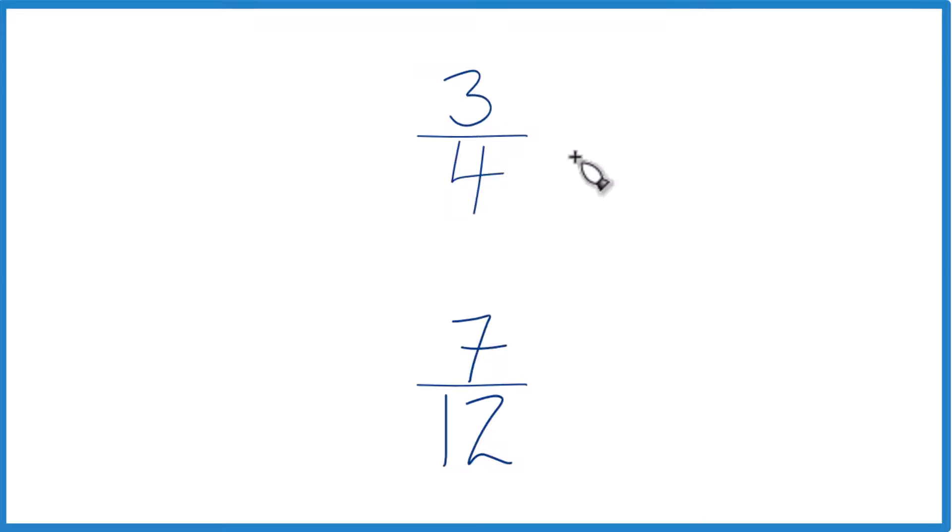So you could just convert these to decimals and compare the decimals on a calculator. That would tell you whether 3 fourths is greater than, less than, or equal to 7 twelfths. The other way is to find a common denominator, something that 4 and 12 go into evenly.